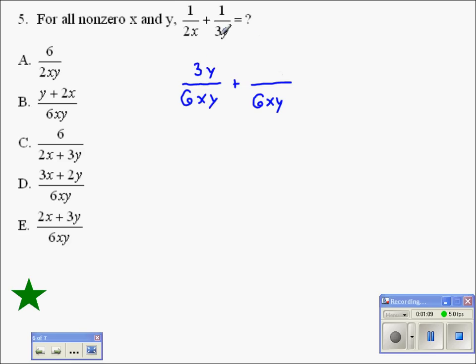Again, in the second fraction, it needed to have a factor of 2x multiplied in the denominator. To be fair, we need to multiply 2x also in the numerator.